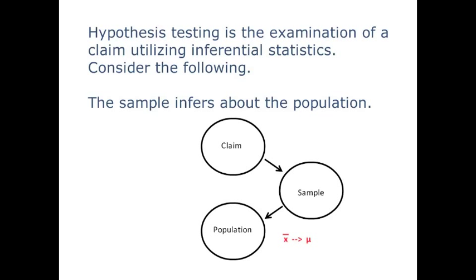But look at the flow. The manufacturer makes a claim. We identify the claim. We take a sample. We collect descriptive statistics of the sample, and then we use that to imply some things about the population. In other words, X bar implies some truths about mu.